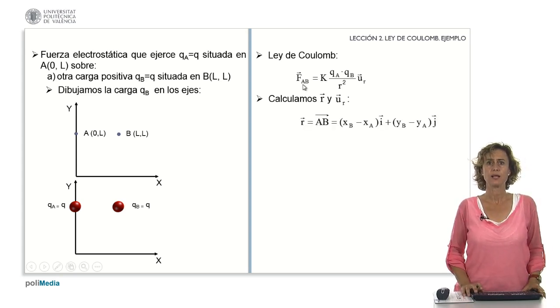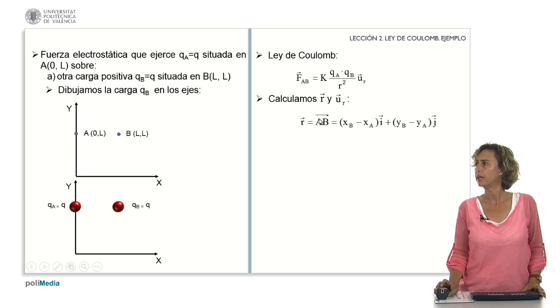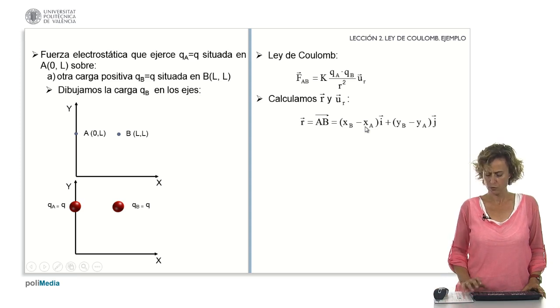What will R be equal to? R is the vector A,B, then it's going to be coordinates of point B minus coordinates of point A. L minus 0, L minus L, 0. Then the vector R is L*i.